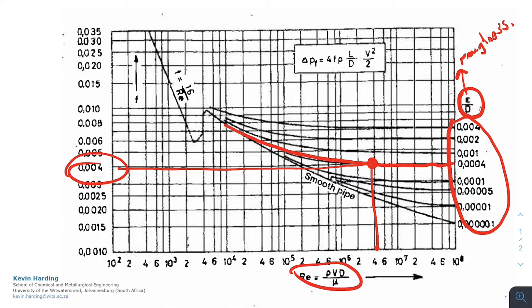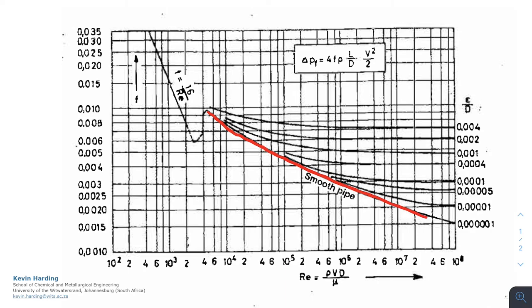If your pipe is smooth, you'll see there's also a line at the bottom here that is labelled as a smooth pipe. So if it's smooth and there is no roughness, you will simply use the Reynolds number, read up to the bottom-most line to get your f on the left.